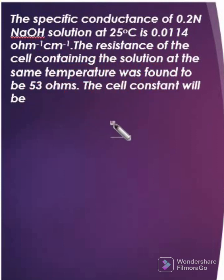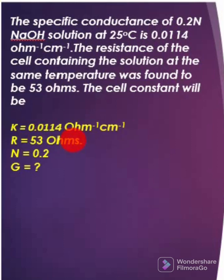The cell constant will be—first let me write down the data given. Specific conductance is equal to 0.0114 ohm minus 1 centimeter minus 1, R is equal to 53 ohms, normality is equal to 0.2.